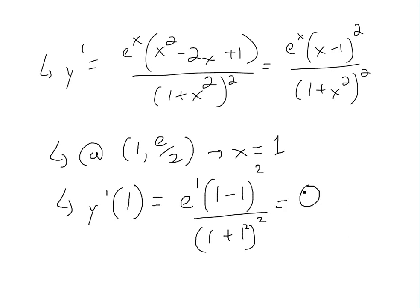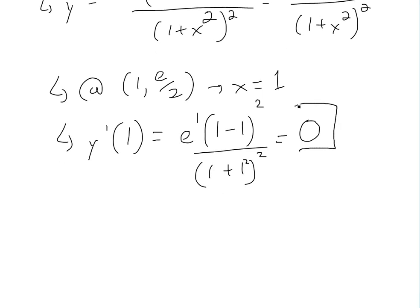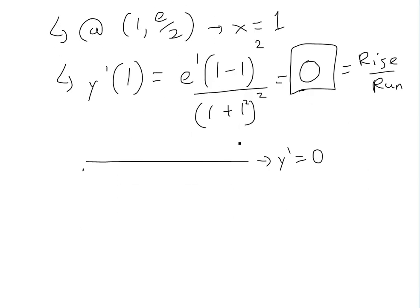So we have a derivative that is 0, and like I showed before, if the derivative is 0, because the number of derivative is rise over run, so if you rise 0 and run 0, it just means you're not going up at all. So this is just a horizontal slope right here. So this slope is horizontal, so y prime equals 0.